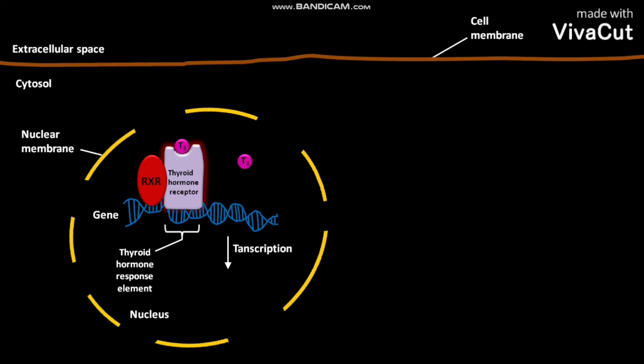The transcription produces large numbers of different types of mRNAs. The mRNAs then move out of the nucleus and reach the cytosol. In the cytosol, the mRNAs undergo translation to produce proteins.